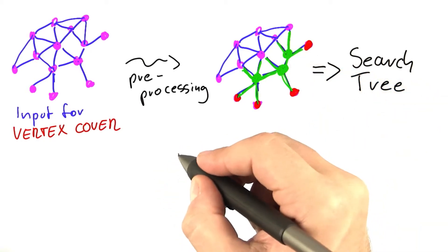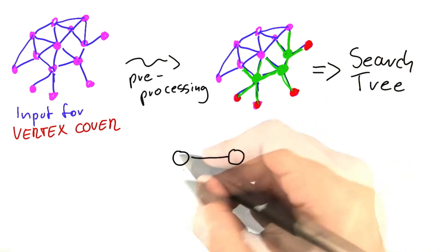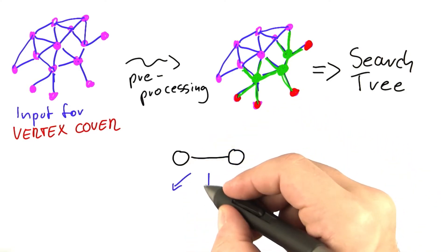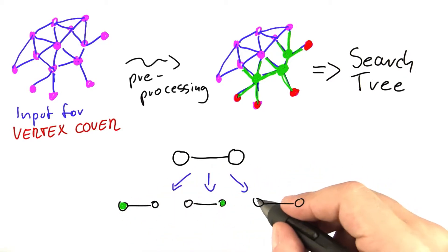The search tree that we had so far was as follows. We started out by looking at an uncovered edge, and then we branched into three possibilities. So we either put exactly one of the vertices into the vertex cover or both.